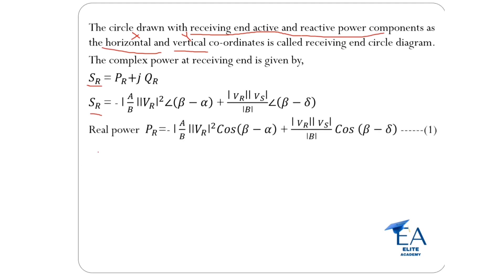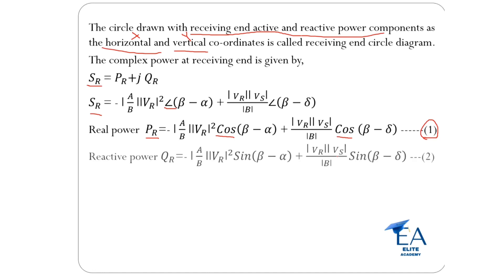From that, we can write down the formula for PR, the active power. Just instead of the angle term, write down cosine — this is your formula for PR, active power, equation number 1. Similarly, write down the equation for reactive power QR: same formula but instead of the angle write down sine. We got the equation for reactive power, equation number 2.